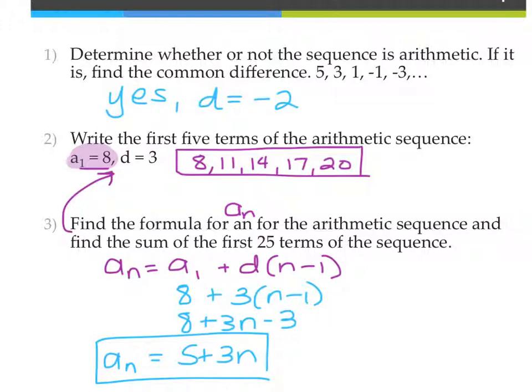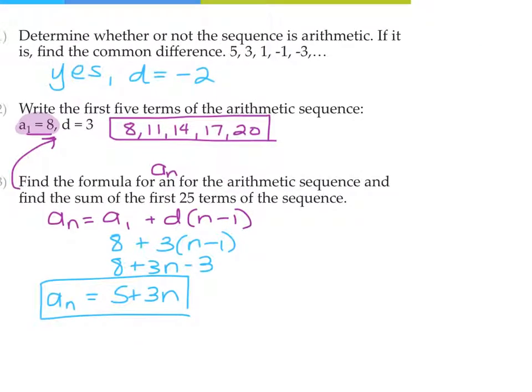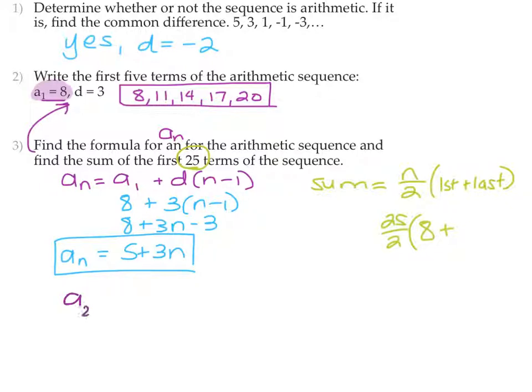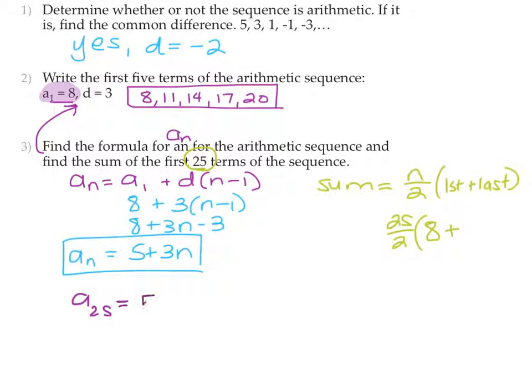Then it says find the sum of the first 25 terms in the sequence. So now we're talking about the sum, and the partial sum is equal to n over 2, the number of terms divided by 2, times the first term plus the last term. So the number of terms, first 25 terms in the sequence, tells you that the n is 25. The first term was given to us, that was 8. The last term would be a sub 25.